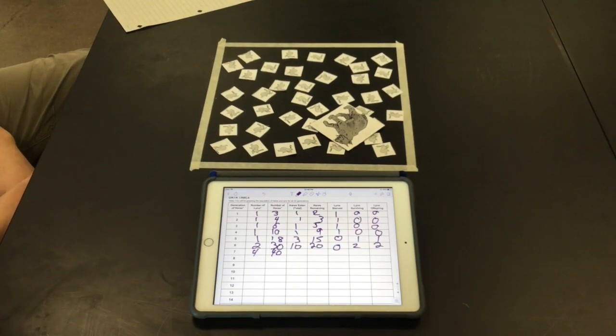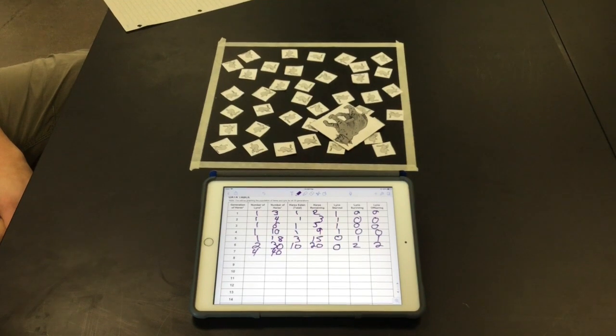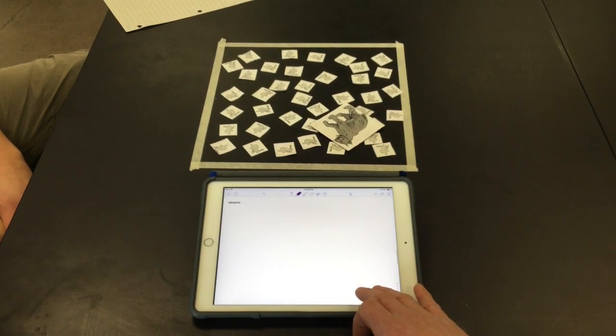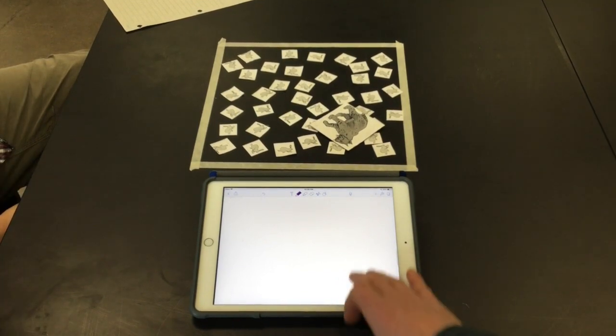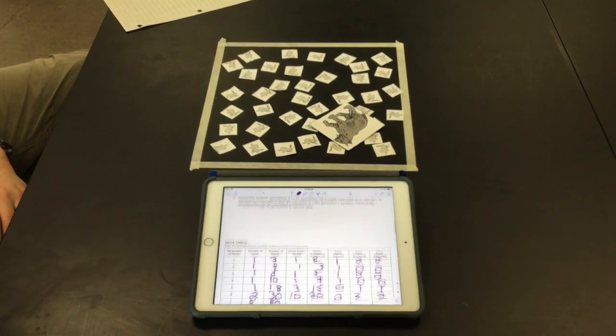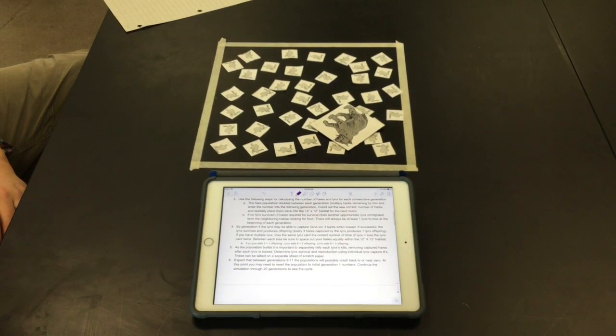You're going to do 20 total rounds. If you ever get to the point where all the hairs for whatever reason are eaten, then just start just like you would with three as you did in generation one where you have one lynx and three hairs. But you're going to continue collecting the data. You'll create an XY scatter plot, we'll give you some instructions on how to do that and then answer some questions at the end. So you have two days to do this lab. It'll probably take a good day and a half to be complete and submit it when you're all done. Thank you.